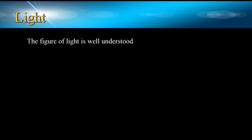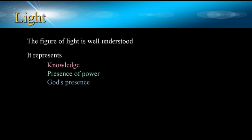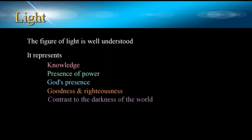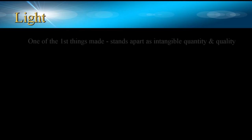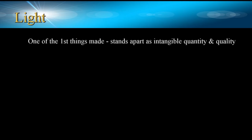As we saw with the presence of darkness, light is a phenomenon and a powerful spiritual figure. As a figure, light is well understood. It represents knowledge, the presence and power of God, and that which is good and righteous. It stands as a contrast to the darkness of the world, but in a spiritual sense, along with darkness, is under the control of God and is an expression of his power. Light was one of the first things made and stands apart from the rest of creation as an intangible quality and quantity. We can also see it as a foundation for life and all that follows. The abode of God is described in terms of light, a fitting analogy for the creator of all things.